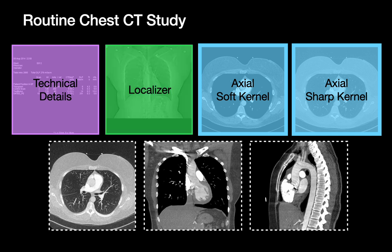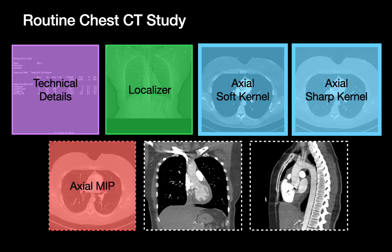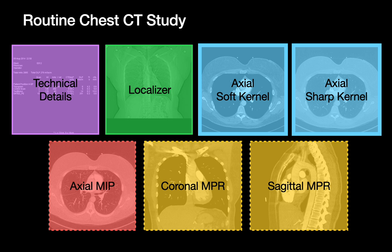Localizer images will usually appear in a different series. These are radiograph-like frontal and often lateral images that the CT technologist used to decide at what table position — down to the millimeter — a CT scan starts and stops. Sometimes you'll also get an axial MIPS series and MPR series that allow you to view the CT volume in the coronal and sagittal planes.